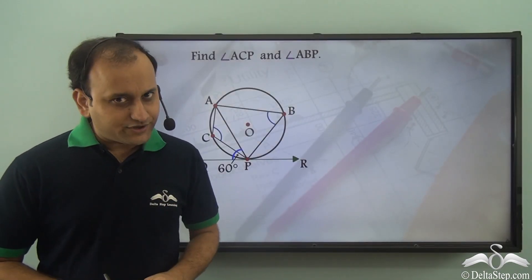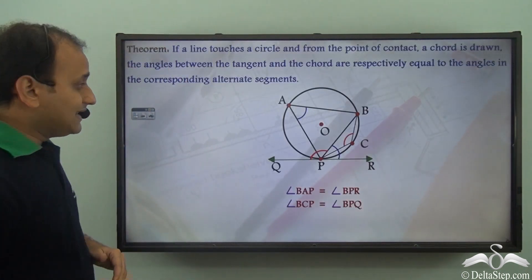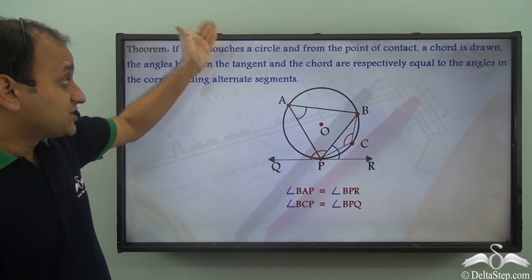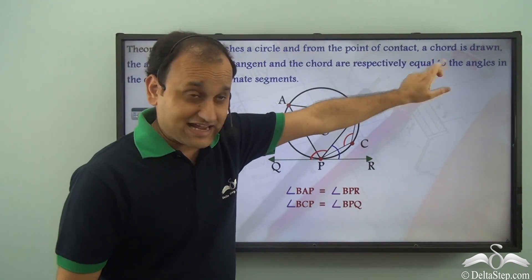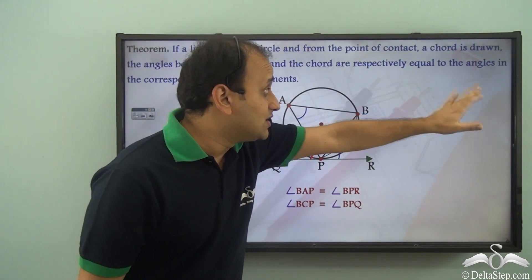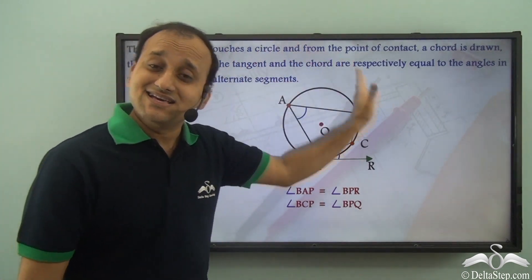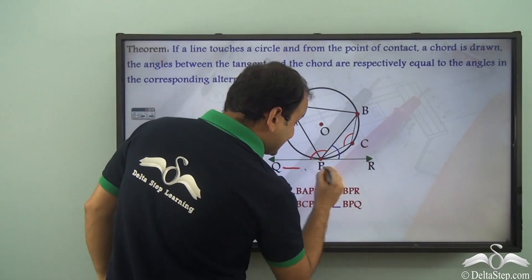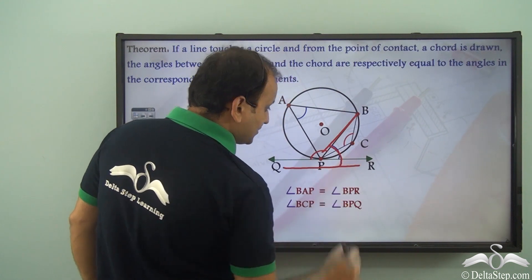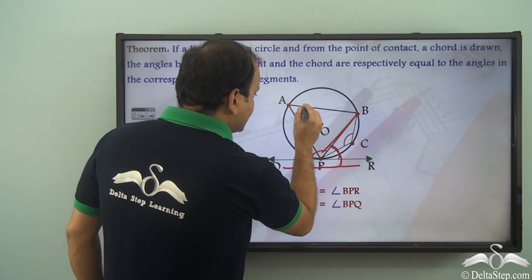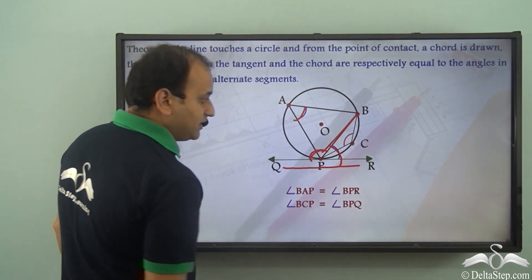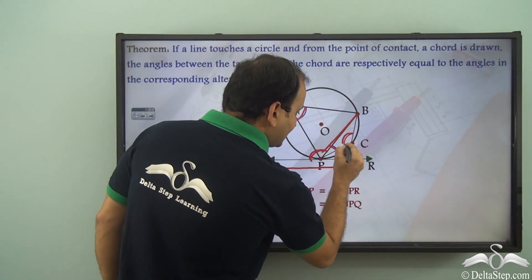In the previous lecture, we learned that if a line touches a circle and from the point of contact a chord is drawn, the angles between the tangent and the chord are respectively equal to the angles in the corresponding alternate segments. So the angle made by the tangent with the chord will be equal to the angle in the alternate segment.